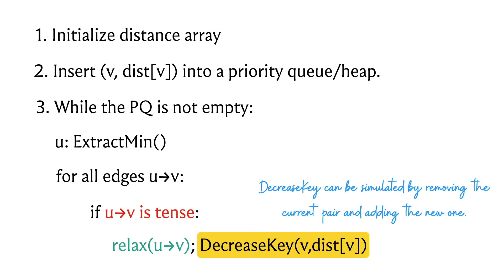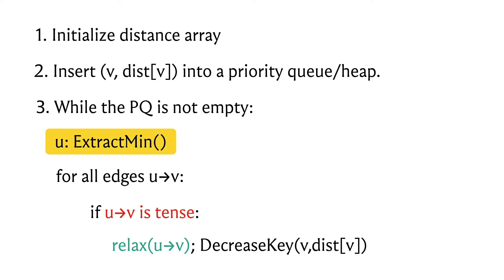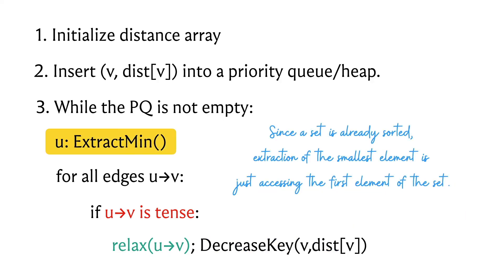Using a set, we split the decrease-key operation into two steps: first delete the old value, then insert the new distance — which is d(u) plus the weight of the edge from u to v. Extract-min is also easy to simulate because the collection is sorted; you can just access the first element and invoke the remove operation on it.